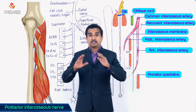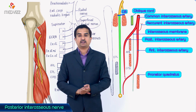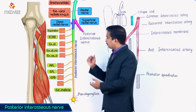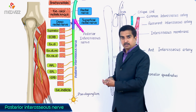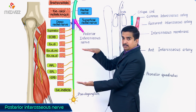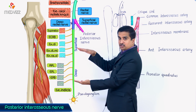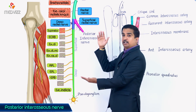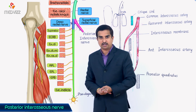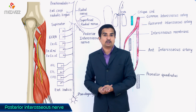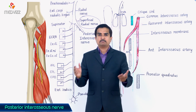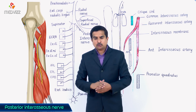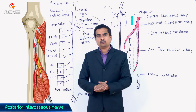The supinator is therefore innervated by the deep branch of the radial nerve, not by the posterior interosseous nerve. Once the posterior interosseous nerve enters the posterior compartment of the forearm, it runs in a superficial plane between the superficial and deep extensor muscles, and finally reaches the interosseous membrane, where it gives innervation to almost all the muscles of the radial and dorsal aspect of the forearm.